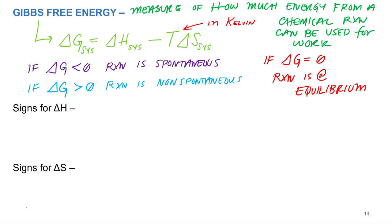So what are the signs for delta H and delta S going to do to this equation? We already know that if delta H is less than zero, what's that mean? Exothermic or endothermic? Exothermic. What do those tend to be? Do those tend to be spontaneous or non-spontaneous? Tend to be spontaneous. If delta H is less than zero, exothermic, it will tend to be spontaneous. If delta H is positive, i.e. endothermic, it will tend to be non-spontaneous.